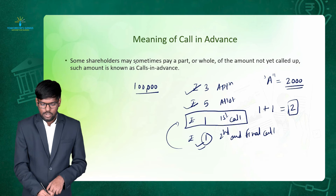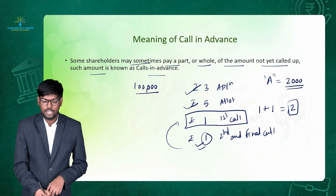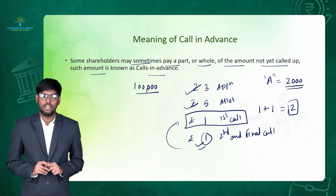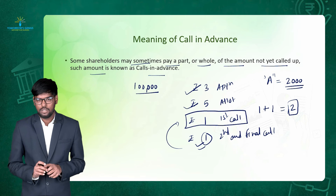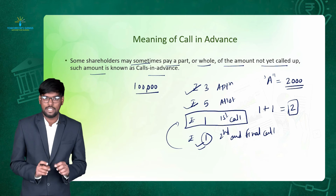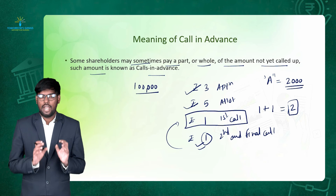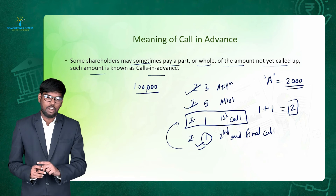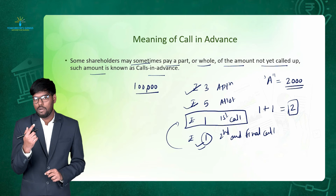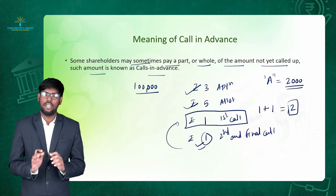Some shareholders may sometimes pay a part or the whole of the amount not yet called up. Such an amount is known as call in advance. In my example, I have not yet called the final call money of rupees 1, but even so, Mr. A paid the entire final amount at the time of the first call only — that is, total rupees 2: first call money rupees 1 and second call money rupees 1. So that is call in advance.